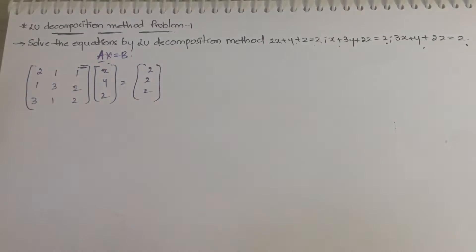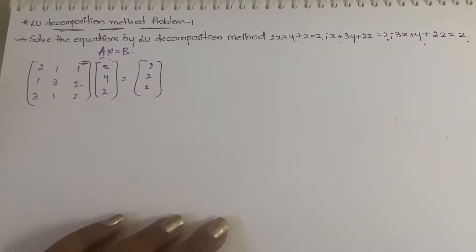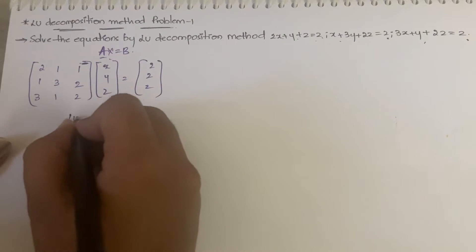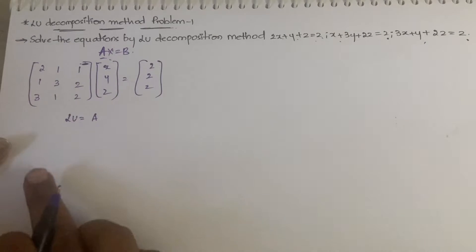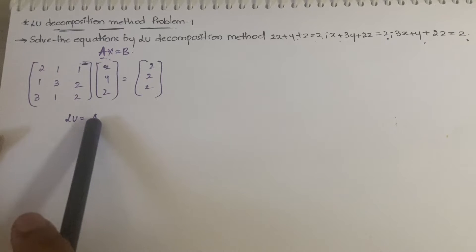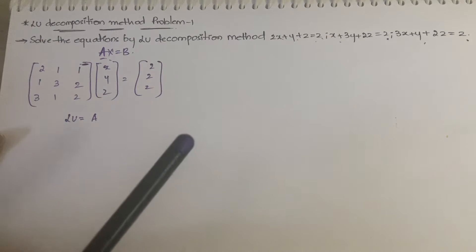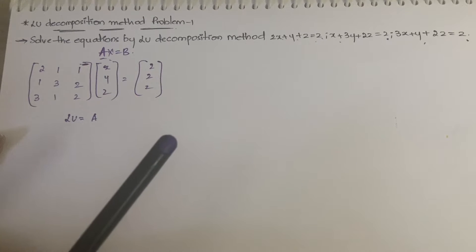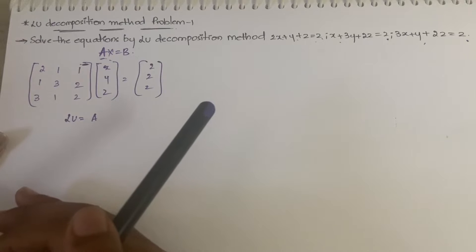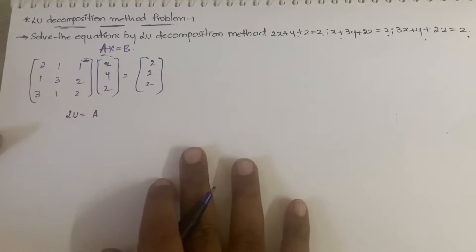We have written AX = B. Now what we have to do is write LU = A, where L is the lower triangular matrix and U is the upper triangular matrix. Lower triangular matrix means all the elements below the diagonal will be non-zero and all elements above the diagonal will be zero. Upper triangular is the reverse of this.